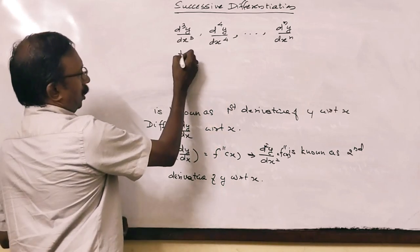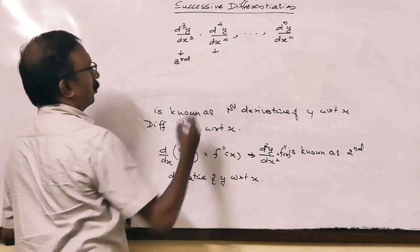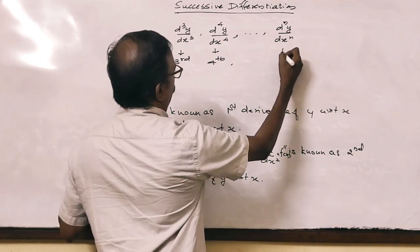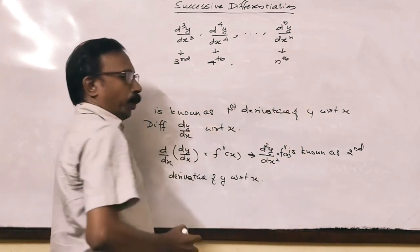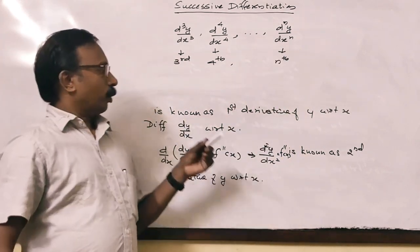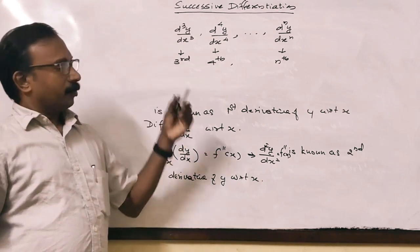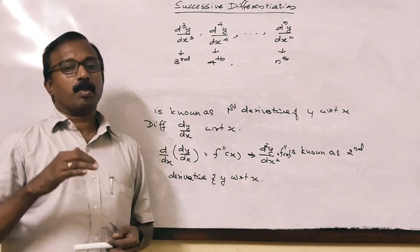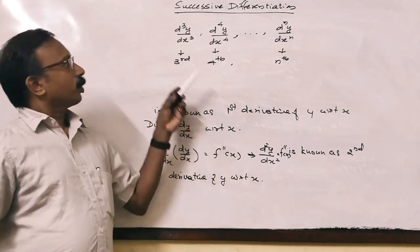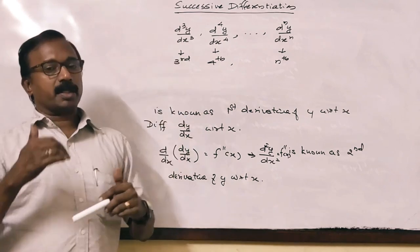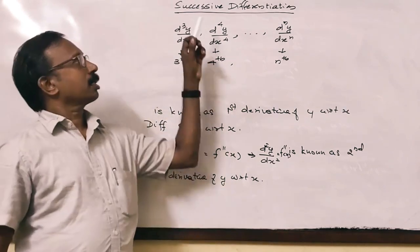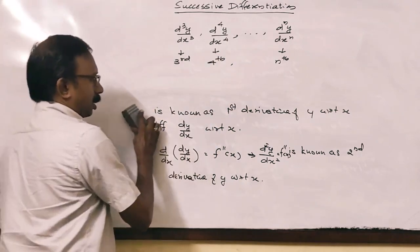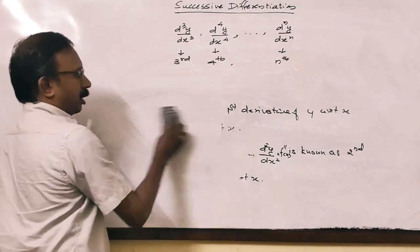They are called the third derivative, fourth derivative, and nth derivative of y with respect to x. The process of obtaining the derivatives of a function in succession — succession means progression — is known as successive differentiation. Successive differentiation is the process of finding the derivatives in succession.